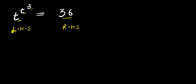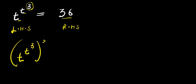What we are going to do is consider the fact that we have 3 here, and because we have 3 at the exponent, we are going to raise each part of this equation to the power of 3. So we have t to the power of t to the power of 3, raised to the power of 3, and this equals 36 to the power of 3.